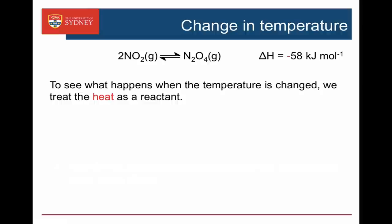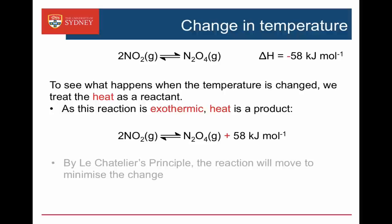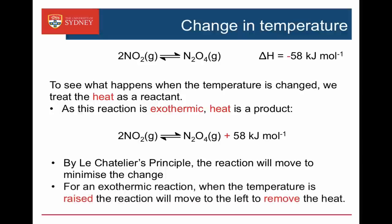Lastly, let's look at the effect of temperature. This is the only case where K is changing — K does depend on temperature. To see what happens when the temperature is changed, we treat the heat as a reactant. Here we have an exothermic reaction, so heat is a product. We could write this as NO2 going to N2O4 plus heat coming out. By Le Chatelier's principle, the reaction will move to minimise any change imposed on it, so if we raise the temperature, the reaction will shift to the left because the reaction produces heat.